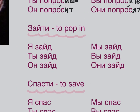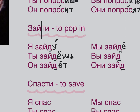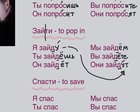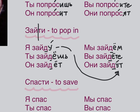ЗАЙТИ — to pop in, just for a short time. The ending is tricky — Д appears everywhere. Я ЗАЙДУ. ТЫ ЗАЙДЁШЬ. ОН ЗАЙДЁТ. МЫ ЗАЙДЁМ. ВЫ ЗАЙДЁТЕ. ОНИ ЗАЙДУТ. If you want to ask a question: КОГДА ТЫ ЗАЙДЁШЬ? If you want to say 'we are going to pop in in the evening': МЫ ЗАЙДЁМ ВЕЧЕРОМ.